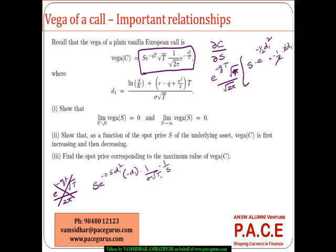Since the derivative of log(S) with respect to S is 1/S, the S terms cancel out. The overall derivative simplifies to e to the power of minus 0.5 D1 squared, times the factor (1 minus D1 divided by sigma times square root of T). This is analogous to the normal distribution density function e to the power of minus half (x minus mu)/sigma squared, which is maximized at x = mu.